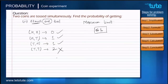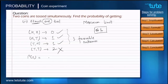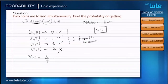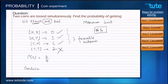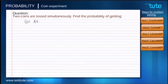Since we need a maximum of one tail or fewer, we include the first three outcomes and exclude the fourth. That gives us three favorable outcomes. Substituting into the formula: 3 favorable outcomes divided by 4 total possible outcomes gives a ratio of 3 upon 4. We conclude: the probability of getting at most one tail while tossing two coins is 3 upon 4.